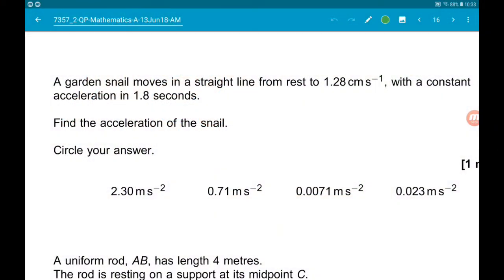Okay, question 10, the start of the mechanics. How do you guys find mechanics? Let me know down below. A garden snail moves in a straight line from rest to 1.28 meters per second with a constant acceleration.